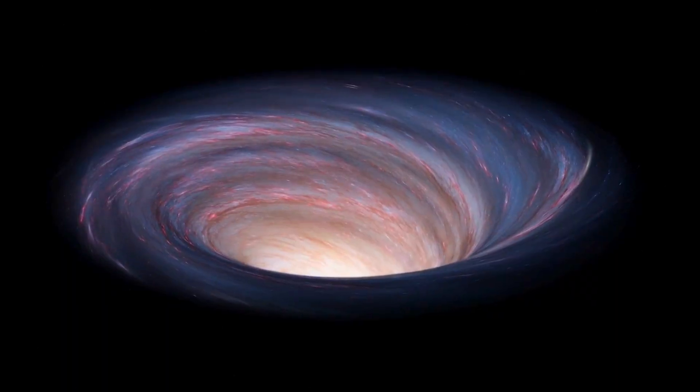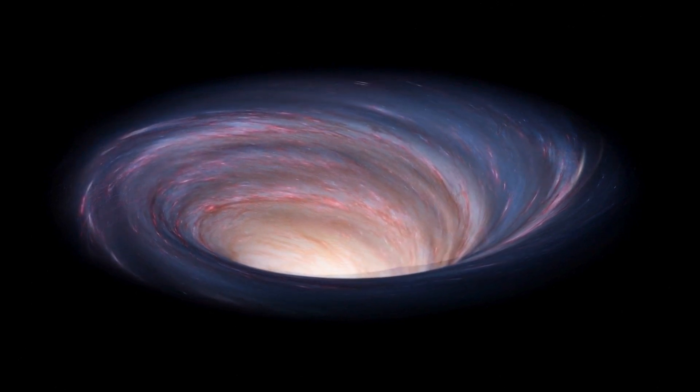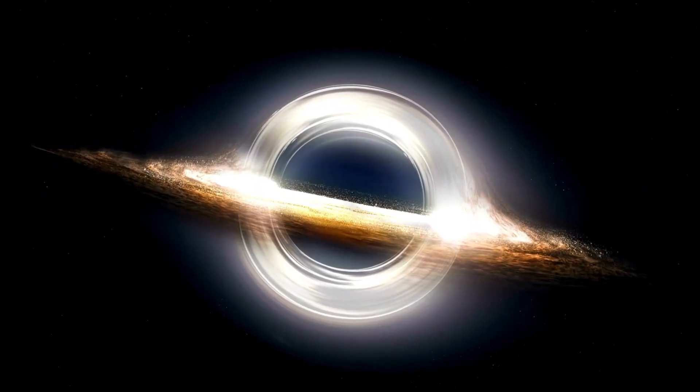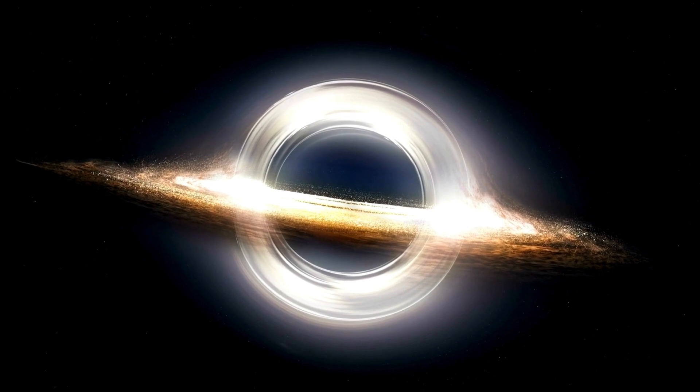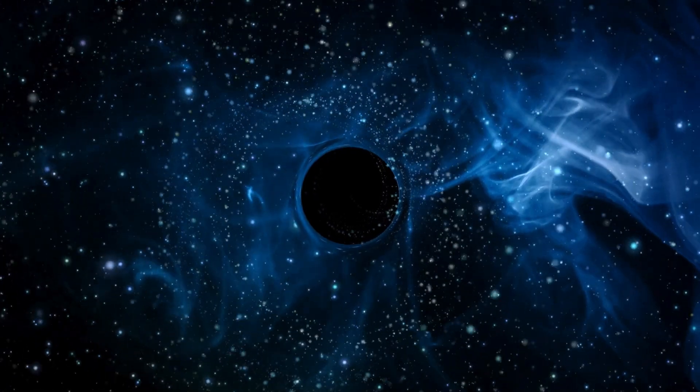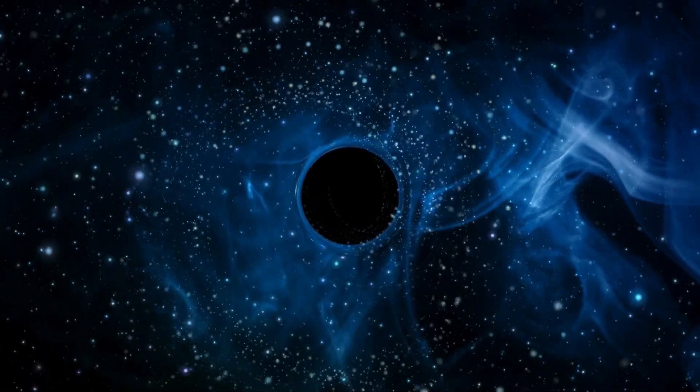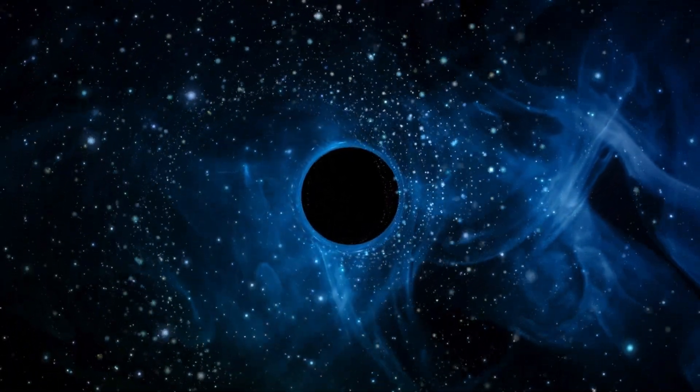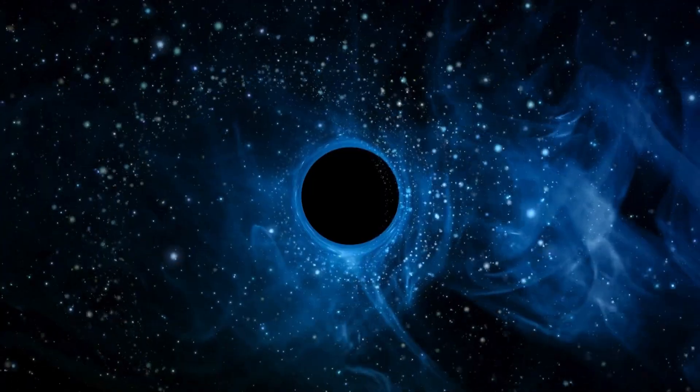The black hole was named Cygnus X-1, located in the Cygnus constellation, approximately 6,000 light-years from Earth. It was a monumental discovery, being many times brighter than the sun and incredibly dense, giving it an immensely powerful gravitational pull. The gravitational force is so intense that not even light can escape from it, which is why it is called a black hole.